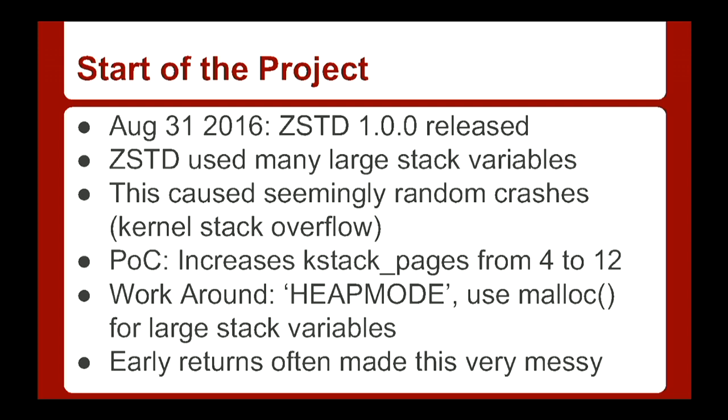I immediately started looking at it, but the first problem with version 1.0 was that ZStandard used a bunch of huge stack variables. Once I reworked it into the FreeBSD kernel, I got really strange crashes caused by stack overflow — and there's no stack protector for the kernel, so the crash was never the same twice. Once I figured that out, I recompiled my kernel and changed the number of pages for stacks from 4 to 12, and it worked. But that probably wasn't going to work in the long run.